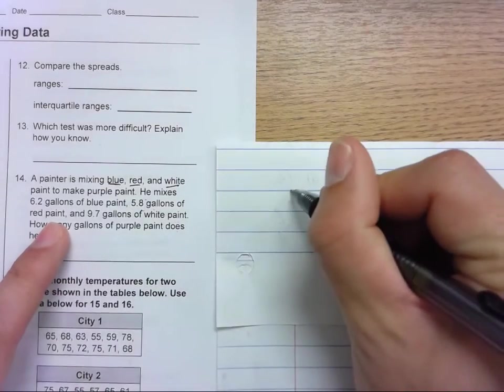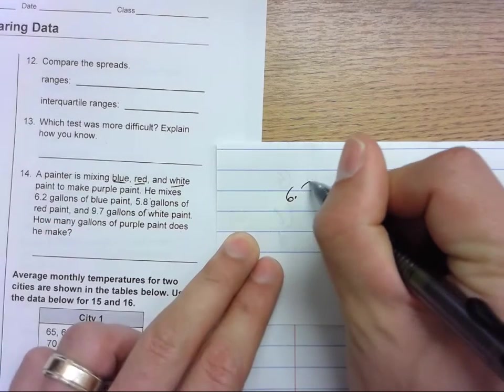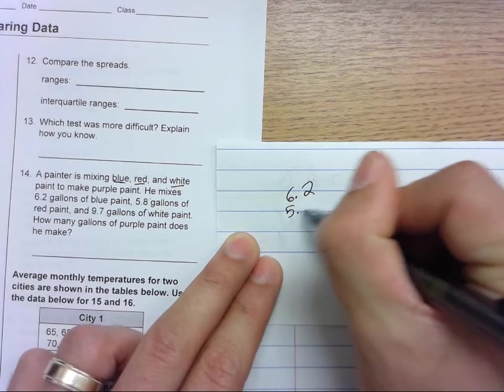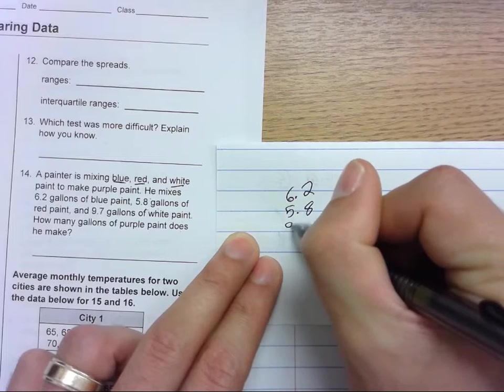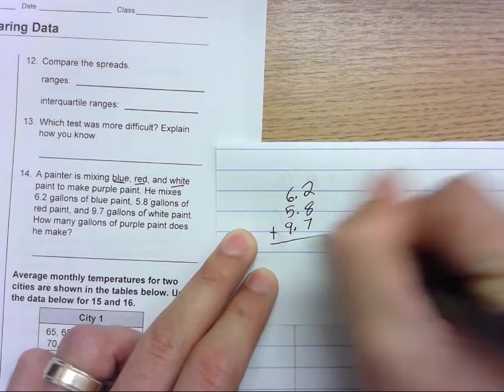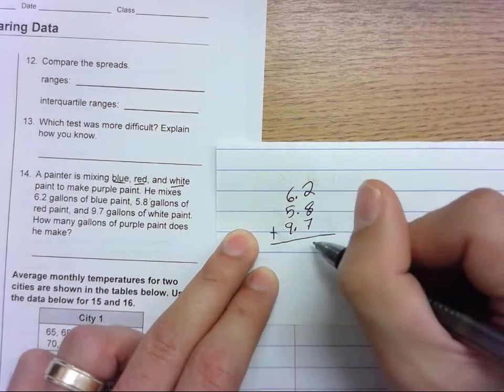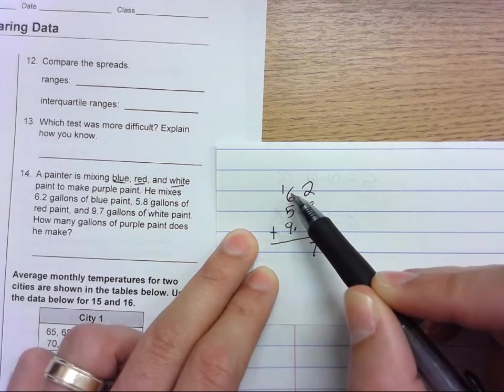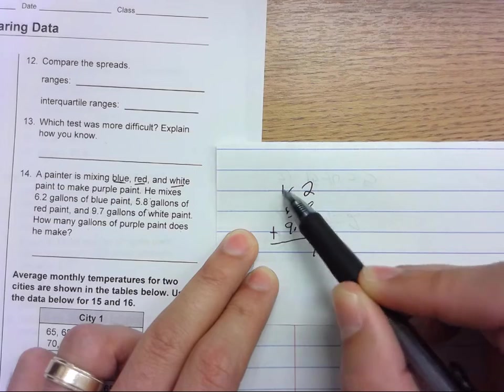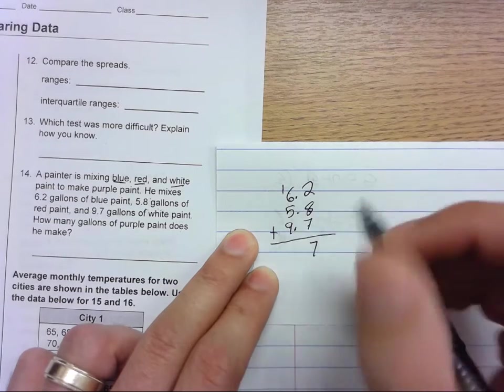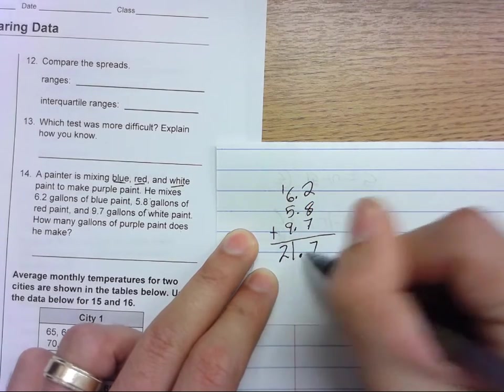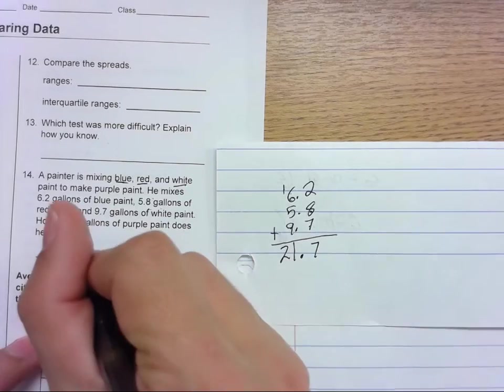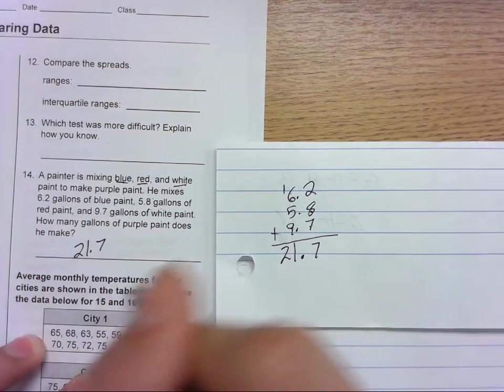We just add them up. So 6.2 plus 5.8 plus 9.7. We add these up: 8 and 2 is 10, plus 7 is 17, carry the one. One and nine is ten, so that would be 21.7. The answer to 14 is 21.7 gallons.